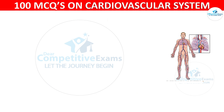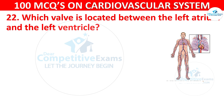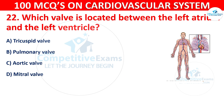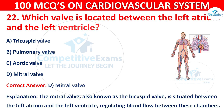Q22. Which valve is located between the left atrium and the left ventricle? Options are: tricuspid valve, pulmonary valve, aortic valve, or mitral valve. The correct answer is D — mitral valve. The mitral valve, also known as the bicuspid valve, is situated between the left atrium and the left ventricle, regulating blood flow between these chambers.